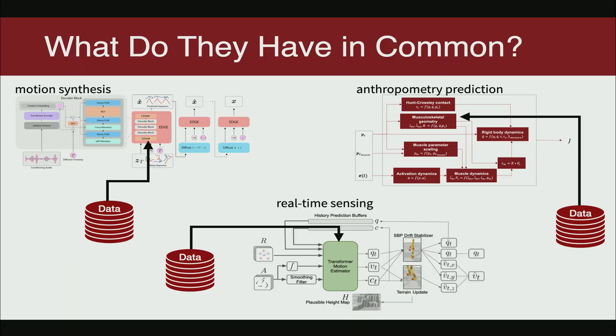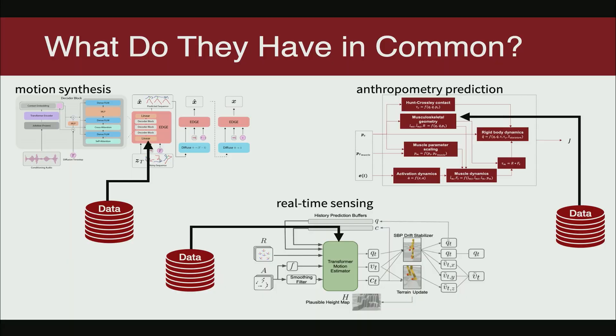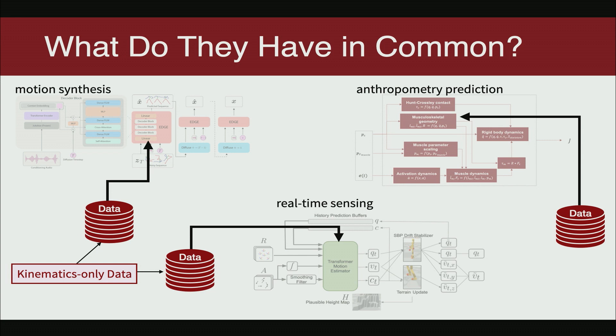All these digital twins use very different algorithms and are designed for different applications, but they have one thing in common: large-scale datasets needed to train the underlying machine learning models. But these datasets are not perfect. For example, the dancing and IMU projects use datasets that only contain kinematic motion but no dynamic motion, which means the models can only learn poses but not the underlying muscle activations or joint torques that give rise to the motion.